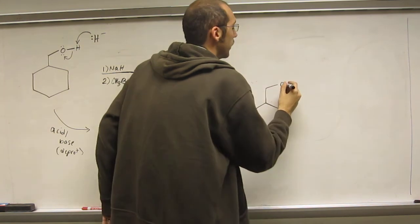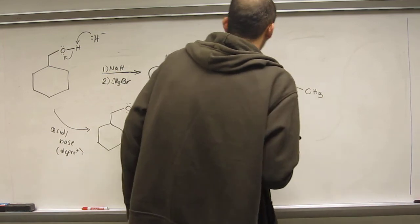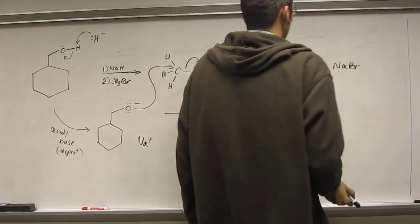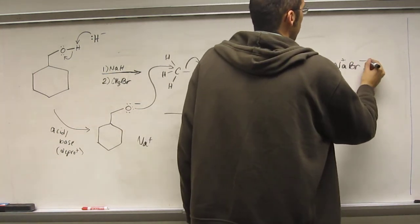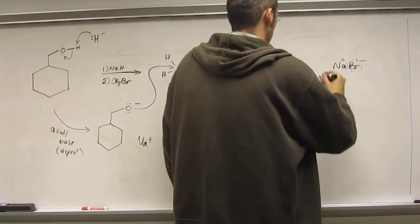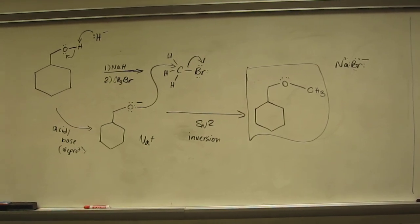You'll see we make an ether out of that plus sodium bromide. That's the only product, sole product. You do that acid-base reaction, bubble hydrogen away, and then add your methyl bromide, do the SN2 reaction. Everybody cool with that one?